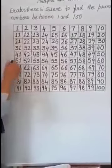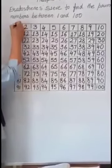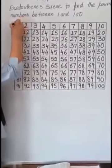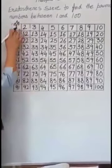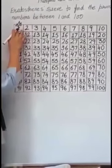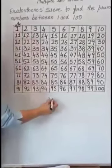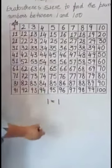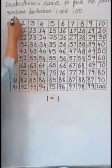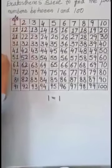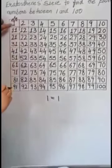We will start from 1. We will make a crown on 1 because 1 is neither prime nor composite. 1 has only 1 factor, so we will put a crown on it. It is a unique number.